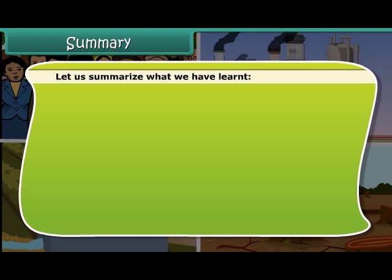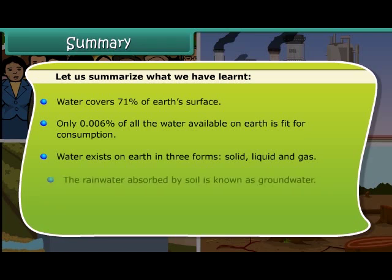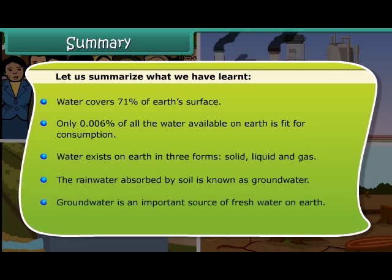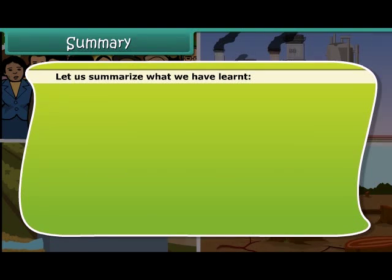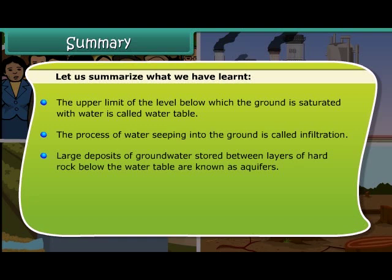Let us summarize what we have learned. Water covers 71% of earth's surface. Only 0.006% of all the water available on earth is fit for consumption. Water exists on earth in three forms: solid, liquid and gas. The rain water absorbed by soil is known as ground water. Ground water is an important source of fresh water on earth. The upper limit of the level below which the ground is saturated with water is called water table. The process of water seeping into the ground is called infiltration. Large deposits of ground water stored between layers of hard rock below the water table are known as aquifers. Indiscriminate use of water leads to depletion of the water table.